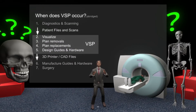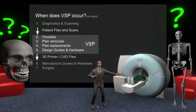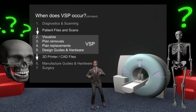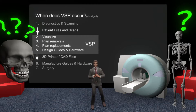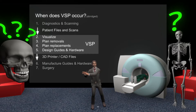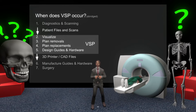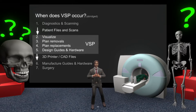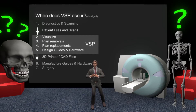Here's an abridged view of when VSP comes into play. A patient goes through all sorts of diagnostics until a team knows a procedure is needed — this is where VSP comes in. At a high level this is four steps: we visualize the pathology, plan anything we need to remove such as diseased tissue, plan any replacements such as donor tissue and fixation plates, and then design guides and hardware to help the team achieve this plan. The final plan is sent for any manufacturing required and then used to perform the procedure.